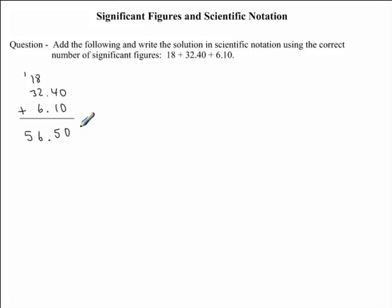We need to rewrite this answer using the correct number of significant figures. To determine how many significant figures our final answer will have, we need to look at the number of significant figures found in each of the three numbers that we added together. The number that has the least amount of significant figures will determine how many digits our final answer will have. Taking a look at our first number, 18, you'll notice that we have two significant figures. The second number, 32.40, has 4 significant digits.